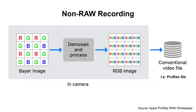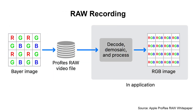For conventional video, de-mosaicing and other processing operations are performed in-camera to produce viewable RGB images that can be recorded into a video file, like a ProRes clip. At playback time, an application only needs to decode the conventional video file to produce RGB images that can be edited and displayed. The de-mosaicing and processing have already been performed by the camera at capture time and are, so to speak, burned in. In contrast, ProRes RAW directly encodes the Bayer pattern image, so the de-mosaicing and processing that would otherwise happen in-camera are now performed by the software reading the ProRes RAW file.